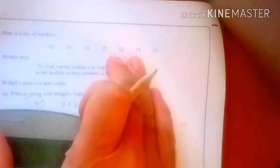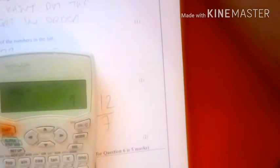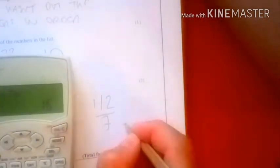And there's 1, 2, 3, 4, 5, 6, 7. So I'm going to divide it by 7. So 112 divided by 7 is 16. So my mean is 16.